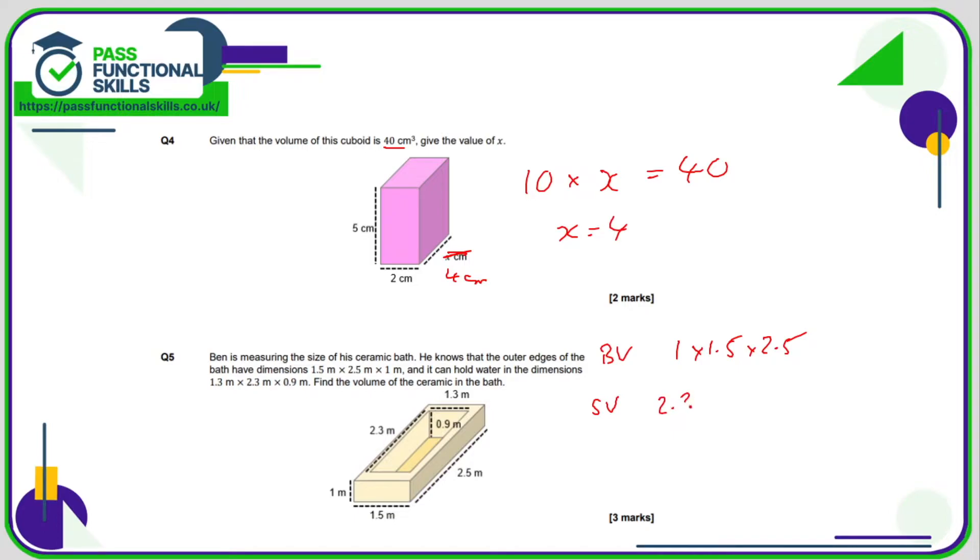So the big volume comes to a total of 3.75 cubic meters, and the little volume comes to 2.691. So therefore the volume of the ceramic is 3.75 minus the 2.691, and that comes to 1.059 cubic meters.